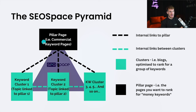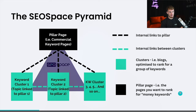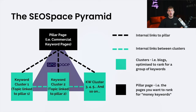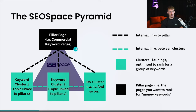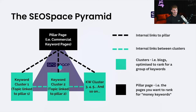At the top of the pyramid we always have our pillar page — the pages you want to rank for your money keywords. Underneath that, we then have things called keyword clusters, which are added to your website via blogs. We add blogs that are optimized to rank for keywords related to the main commercial keyword you want to rank for. We add these blogs to our website as topics linked to your pillar page, and then we internally link these.